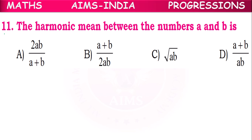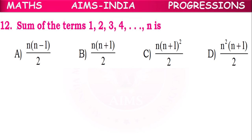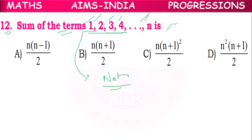Eleventh question: The harmonic mean between numbers A and B is 2AB/(A + B), so option A is correct. Twelfth question: The sum of terms 1, 2, 3, 4, …, n — these are the first n natural numbers. The sum of the first n natural numbers is denoted sigma n, whose formula is n(n+1)/2. Option B is correct.